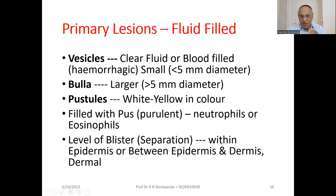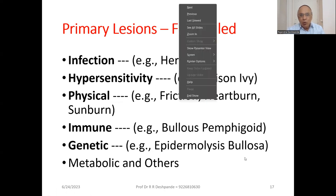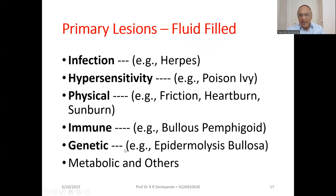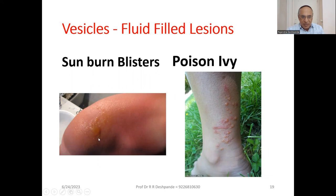The level of blisters involves separation within the epidermis, or between epidermis and dermis, or it may be dermal. These blisters are fluid-filled types of lesion. Examples: infection — viral infection like herpes zoster or herpes simplex. Hypersensitivity reaction like poison ivy, a type of plant. Physical causes like friction, heat burn, or chemical burn. Immune — bullous pemphigoid. Genetic — epidermolysis bullosa. There are also metabolic causes, though these are very rare. Here you can see herpes with fluid-filled lesions, bullous pemphigoid, chemical burn blisters, and poison ivy vesicles.